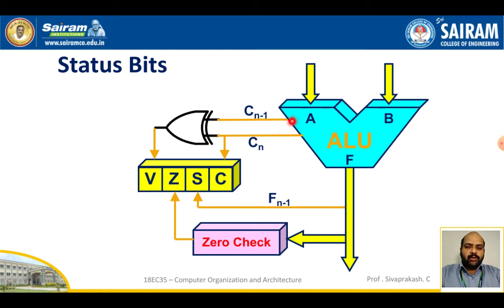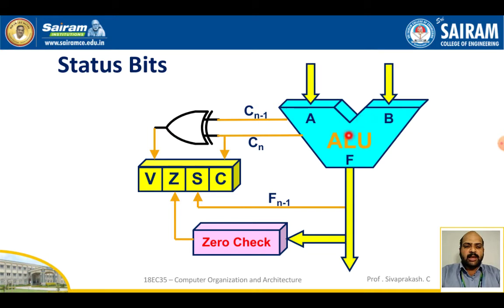To check for overflow, we examine the carry bits C(n-1) and C(n). Both are XORed together — the outcome of this XOR produces the overflow bit. Using these four operations on the ALU output, we verify which flag is set: carry flag, sign flag, zero flag, or overflow flag.